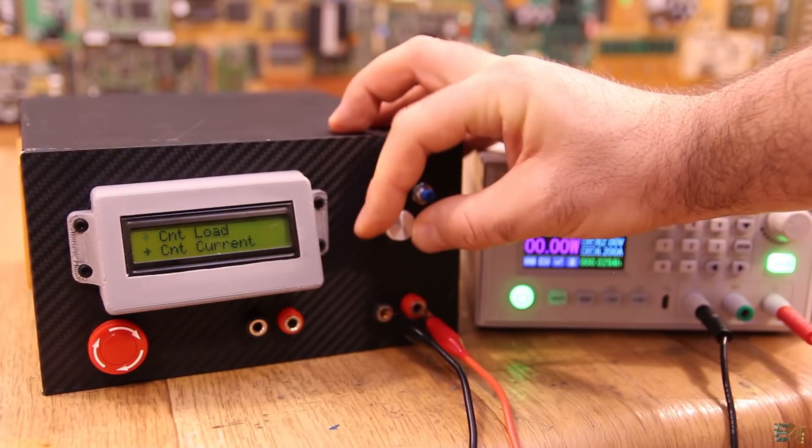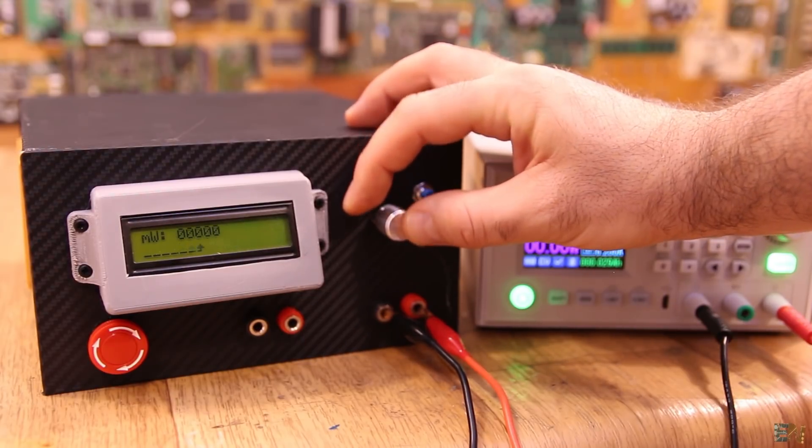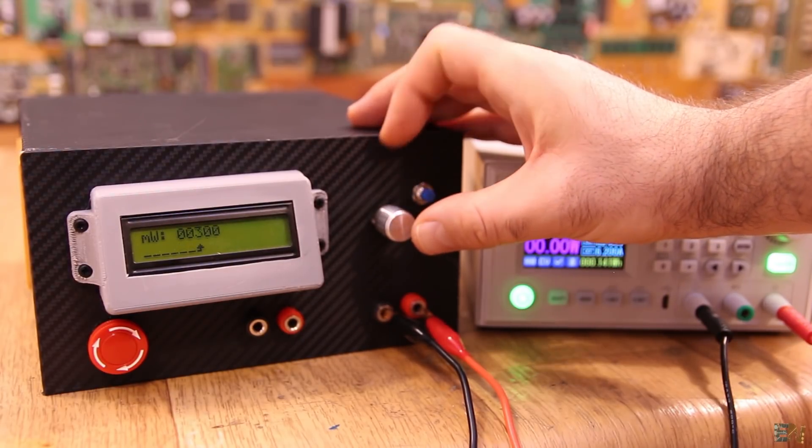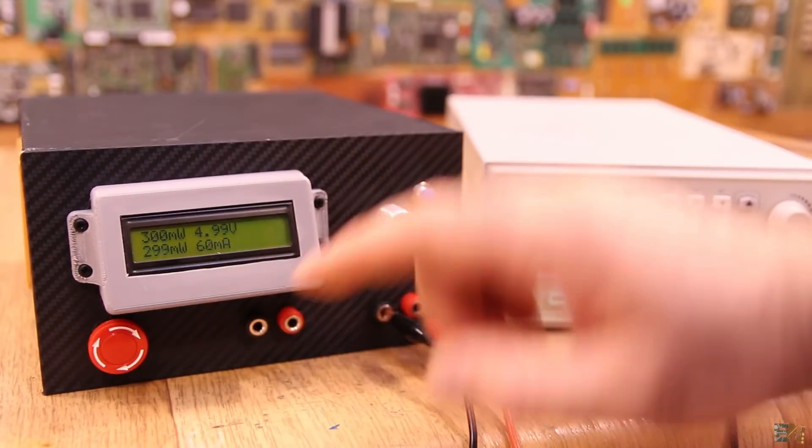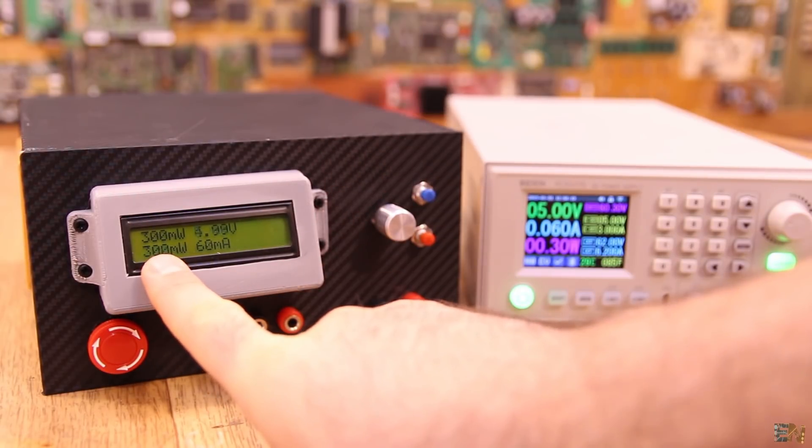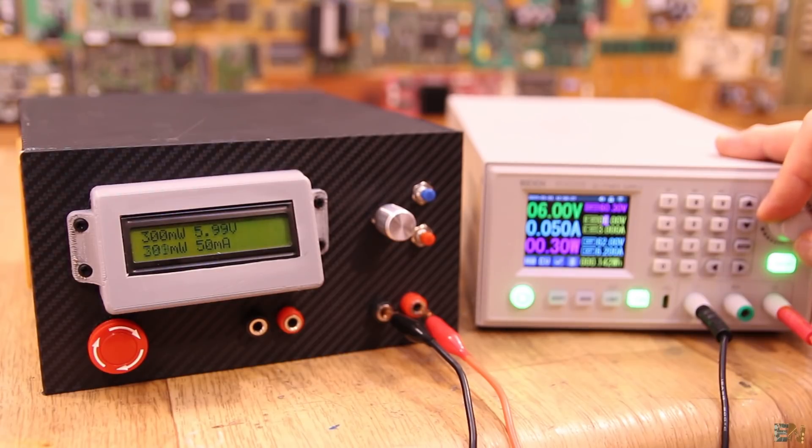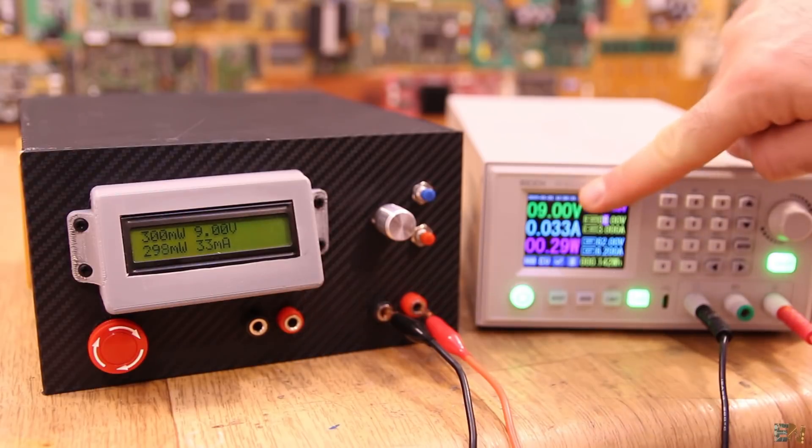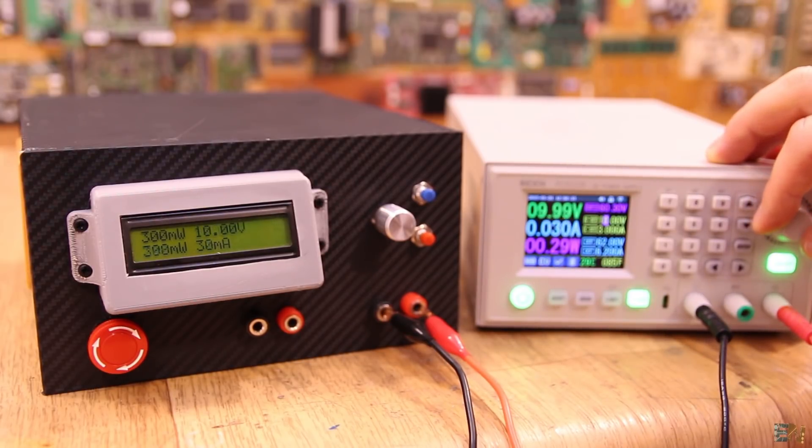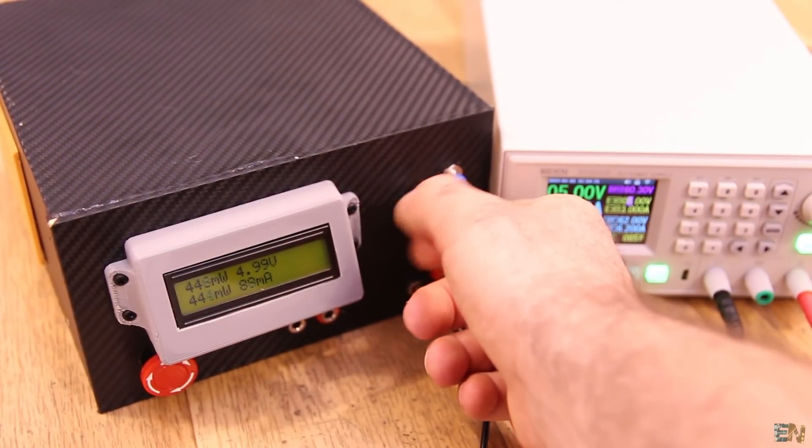Finally press the menu button and we go into power mode. I select a constant power of 0.3W or 300mW. I connect the supply and there you go. In this case, even if I change the input voltage from the supply, the power stays the same. The controller automatically adapts the current value. Once again use the rotary encoder to increase or decrease the value if you want.